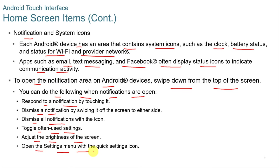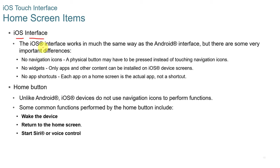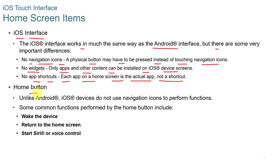When notifications are open on Android, you can respond to or dismiss notifications, toggle often-used settings, adjust screen brightness, or open the settings menu via the quick settings icon. The iOS interface works in much the same way as Android, but with some differences: there are no navigation icons, no widgets, and no app shortcuts. Each app on a home screen is the actual app, not a shortcut.